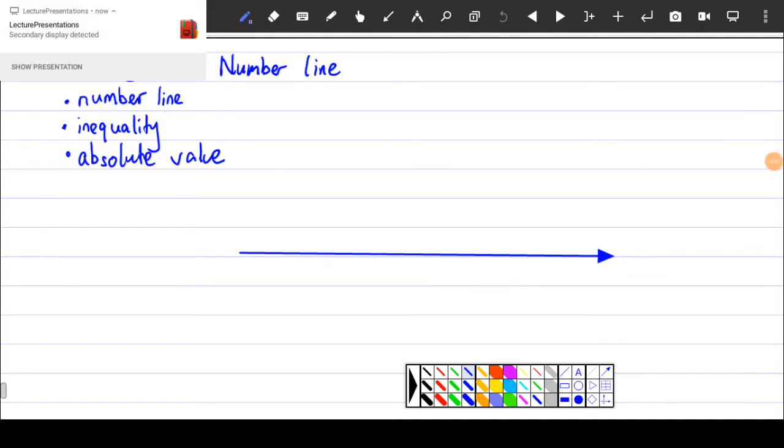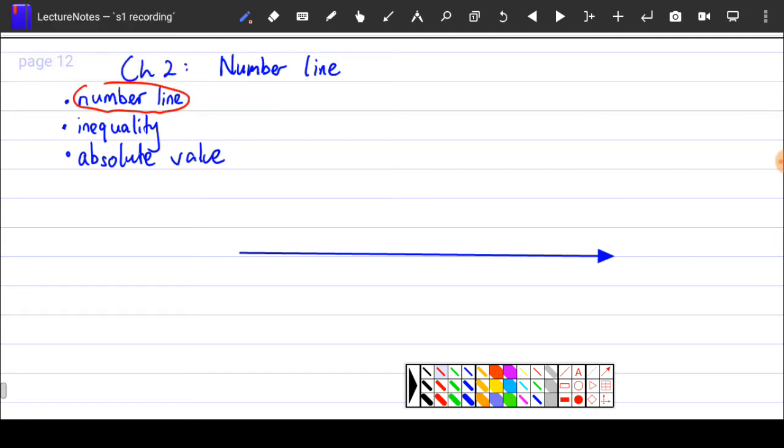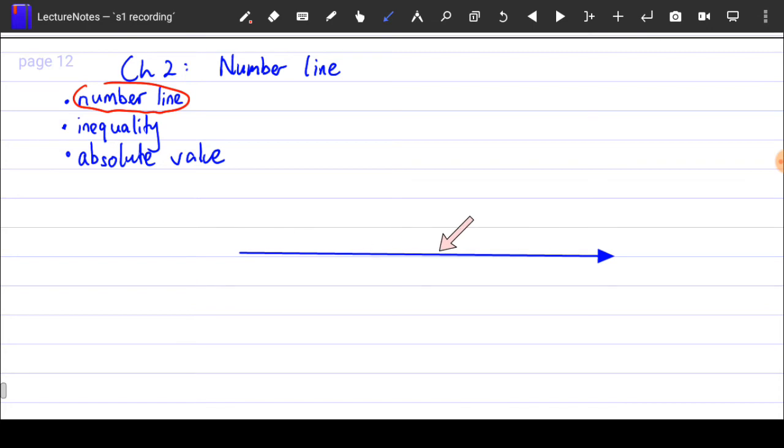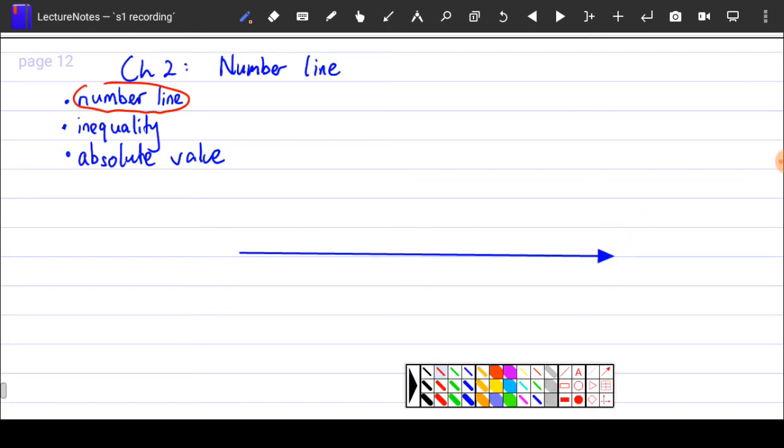Okay, next we talk about number line. First of all, number line. Number line consists of what you see here, a straight line with an arrow, and usually we need to draw the number 0.